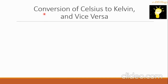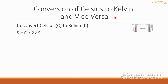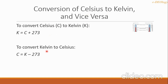Let's go now to the conversion of Celsius to Kelvin and vice versa. To convert Celsius to Kelvin, the formula is: K equals C plus 273. To convert Kelvin to Celsius, the formula is: C equals K minus 273.